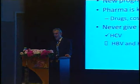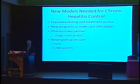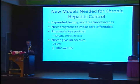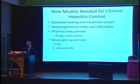So we certainly need different models for hepatitis control. We need to start with expanded testing and treatment access — it doesn't matter how many cures you have if people don't even know they have the infection. We certainly need programs to make care more affordable. And here it's important to recognize the partnerships that we have with pharma. In each country, the cost of treatment has to be taken into consideration, and so we need dialogue and collaborations to make treatment access possible around the world.